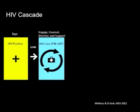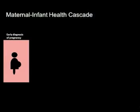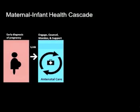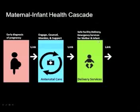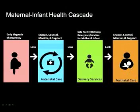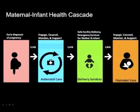Can we think of a similar cascade to the HIV cascade to achieve optimal outcomes for maternal and child health? Early diagnosis of pregnancy is very important. You need to link pregnant women to antenatal care programs — engage, counsel, monitor, and support them. Then link them to delivery services where safe facility delivery is possible, with emergency resuscitation and emergency services available for mother and child. And you have to think of this in a continuity fashion through postnatal care. The lesson learned from the HIV response is to think of it as a continuous cascade and optimize every part of it to achieve optimal outcomes.